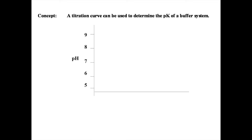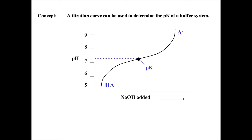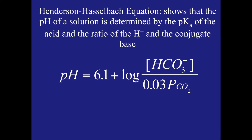Now let's take a look at our titration curve. In this titration we are adding a known base, NaOH, to an acidic solution. At the beginning there will be a high concentration of acid, but as the base reacts with the acid, more anion will be produced. The point in the middle where the concentrations of the acid and the anion are the same is what we call the pK. Remember that the Henderson-Hasselbalch equation shows that the pH of a solution is determined by the pKa of the acid and the ratio of the hydrogen ion and the conjugate base.